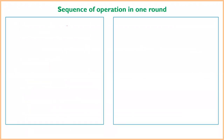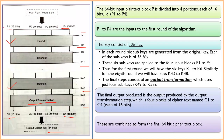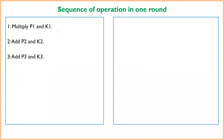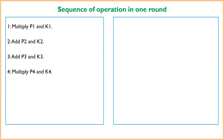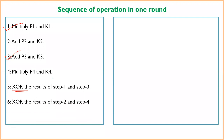The sequence of operations in each round is as follows: Step 1 — multiply P1 and K1. Step 2 — add P2 and K2. Step 3 — add P3 and K3. Step 4 — multiply P4 and K4. Step 5 — XOR the results of steps 1 and 3. Step 6 — XOR the results of steps 2 and 4.